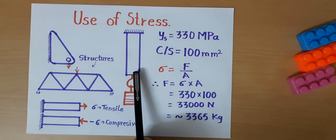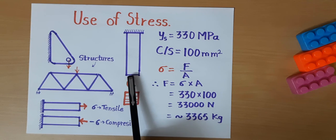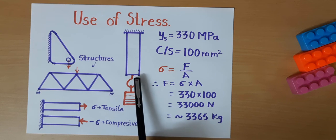We can see the weight lifting capacity or limit of this square rod is equal to 33,000 Newton or 3,365 kg.